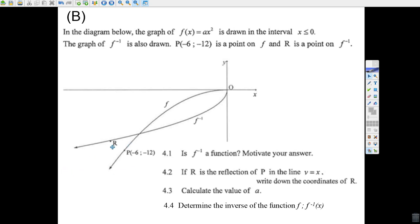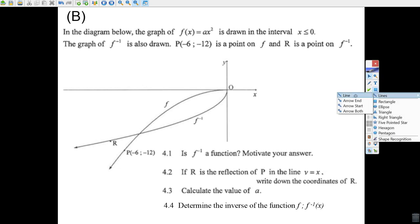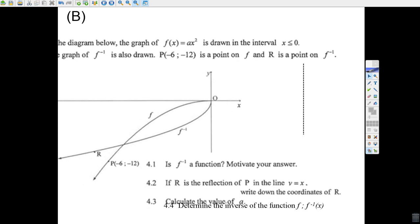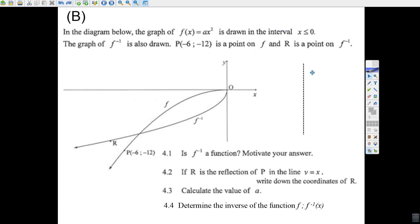You could take a vertical line and pass it through here. Let's make a vertical line. There's a vertical line, a dotted line. If you pass that vertical dotted line through there, look, it only hits once. For every x value, there's only one y value on that inverse function. That's why it's a function.